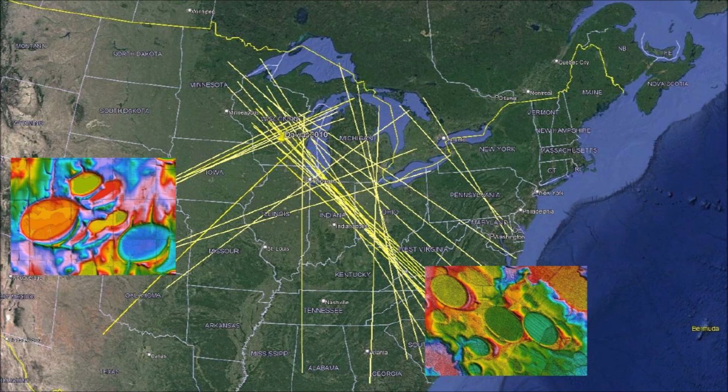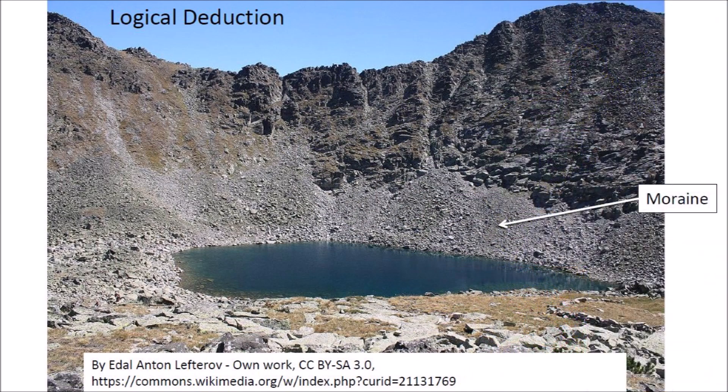It is time to make some logical deductions. Logical deductions are used all the time in science. A logical deduction is a conclusion that can be reached about something because of other things that we know to be true. For example, the coverage of glaciers that are now gone is inferred from the stony moraines that they left behind when the ice melted. Not every pile of rocks is a moraine, so geologists need to be careful about identifying them.